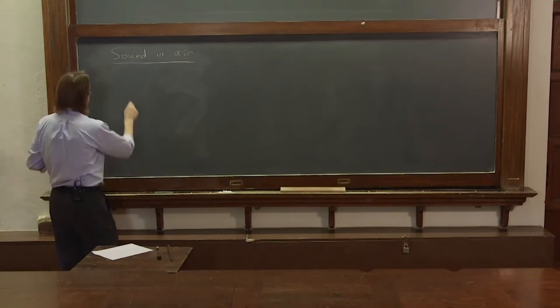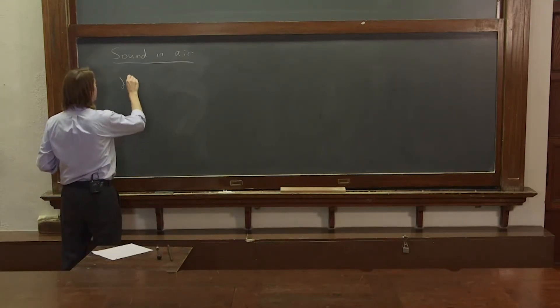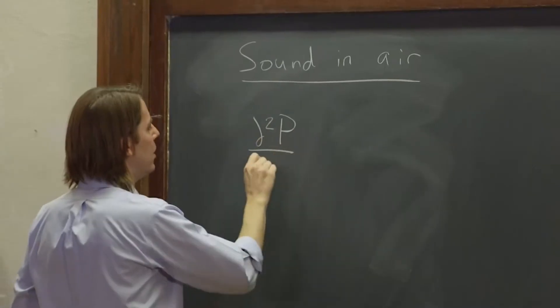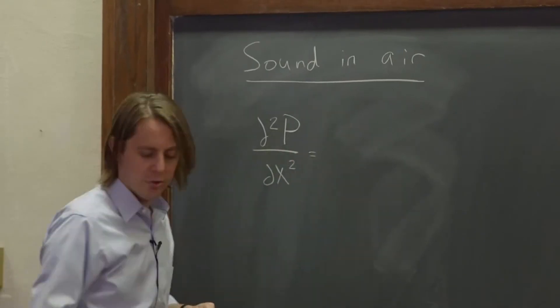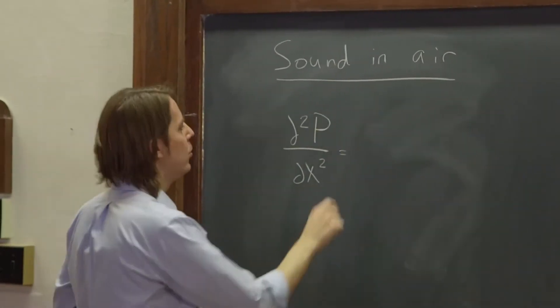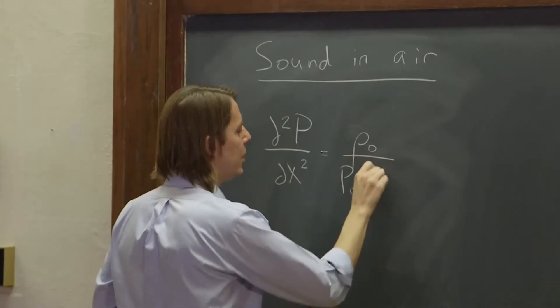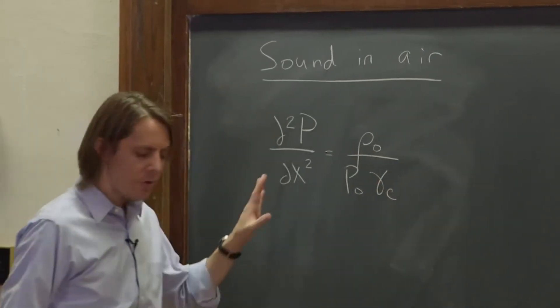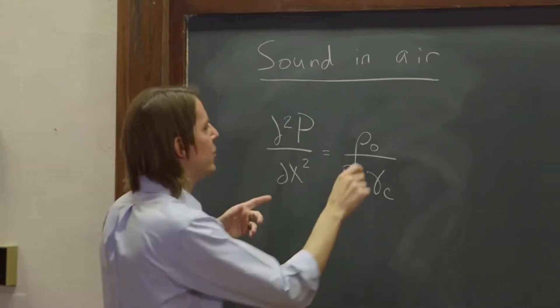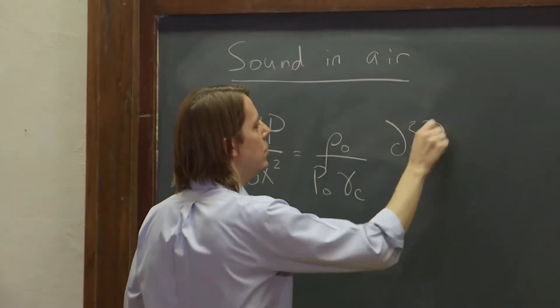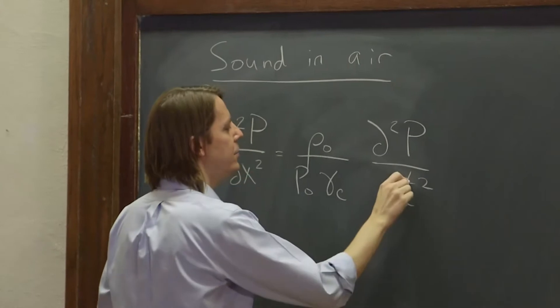So let me just give you the wave equation for air, and I'll explain the parts. So d²p/dx² equals ρ₀ over p₀ times γc, I'll tell you what those are in a second, and then of course d²p/dt².